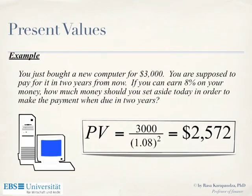Let's do one example. You just bought a new computer and the salesperson tells you: no problem, you don't have to pay anything today, but in two years you have to pay $3,000. These were common deals in the US before the financial crisis. What is the present value of this deal? You just discount $3,000 at 8%, dividing by 1.08 squared, and you get $2,572. This means if you put $2,572 today in a bank, you end up with $3,000 in two years.